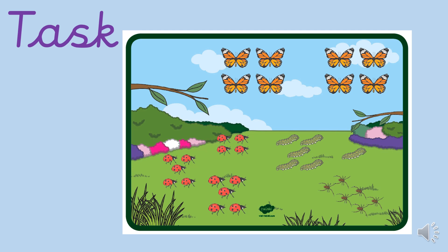So your task today is to use the same mini beast picture that we've looked at, but there are going to be different questions for a grown-up to ask you. Some of the questions are more challenging than others — we're near the end of our estimation week, so we should be pretty good at it now. It might ask you things like can you compare, so look at the ladybirds with the spiders, or which mini beast do you think there is more of.